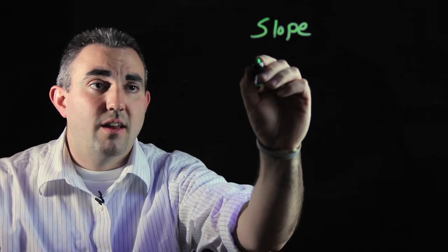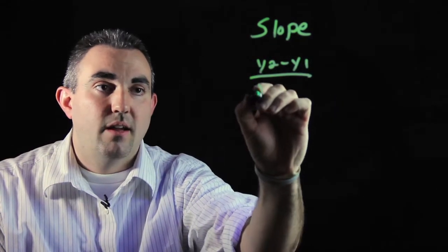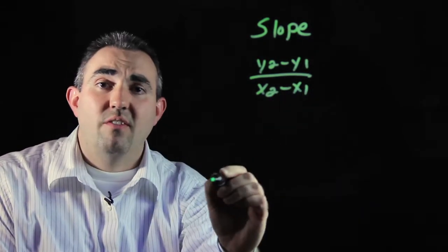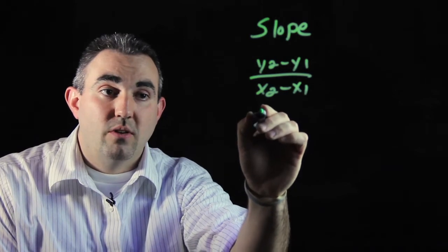Slope has a specific formula when you're dealing with line graphs. It is y2 minus y1 divided by x2 minus x1. Now, in order to find the gradient on a line graph, you need an actual line graph.